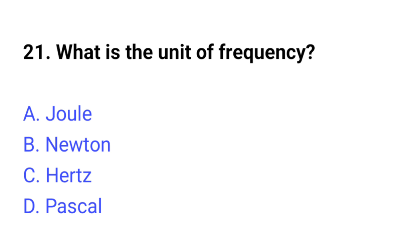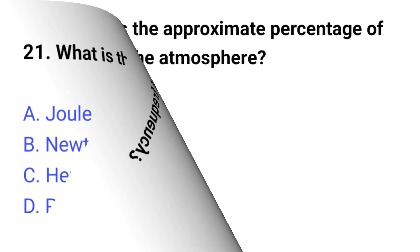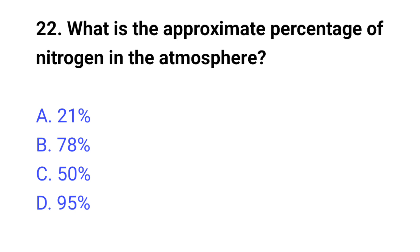Question number twenty-one: what is the unit of frequency? The right answer is option C, Hertz. Question number twenty-two: what is the approximate percentage of nitrogen in the atmosphere? The right answer is option B, 78%.